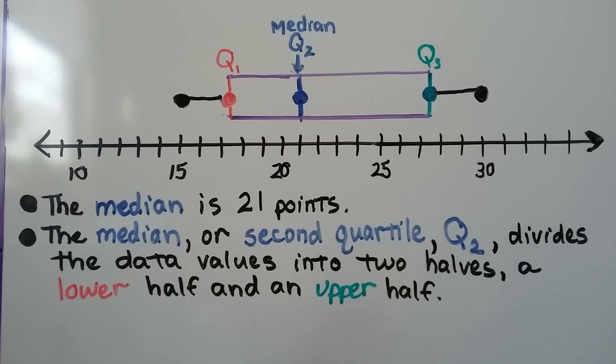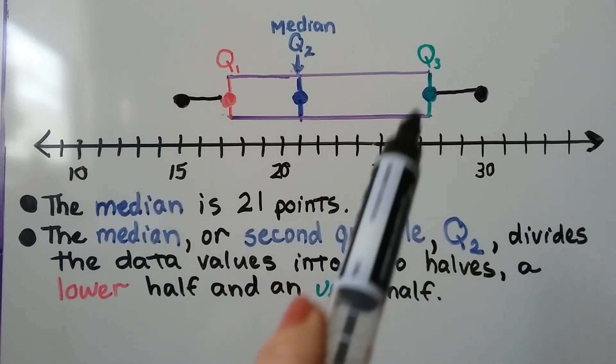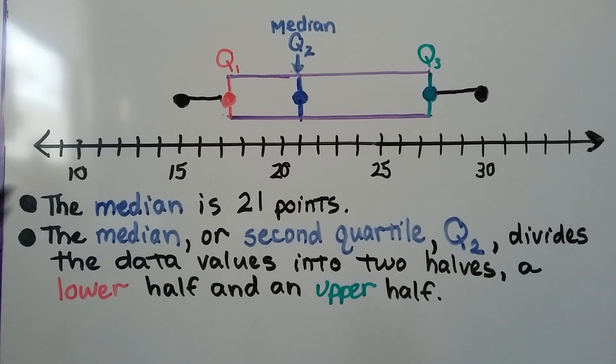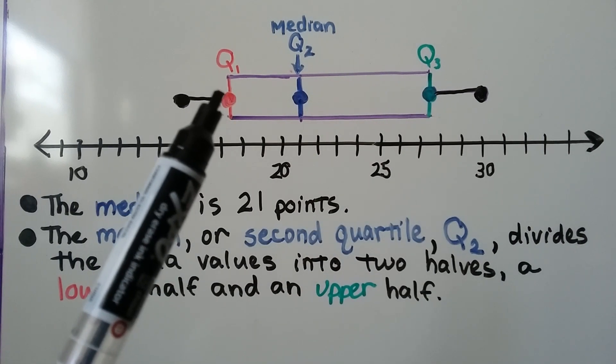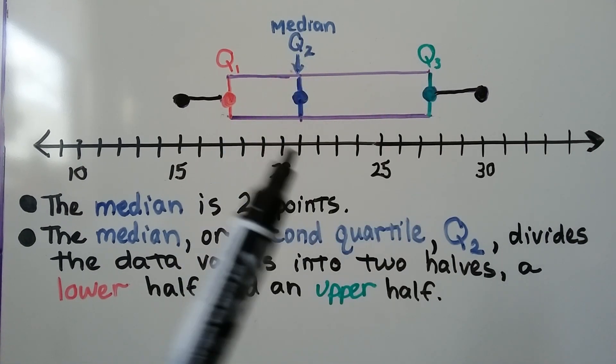This is the same box plot. The median is 21 points. The median, or second quartile, we write it as Q with a subscript 2. It divides the data values into two halves, a lower half and an upper half. So here's the first quartile, here's the third quartile, and the median is the second one.